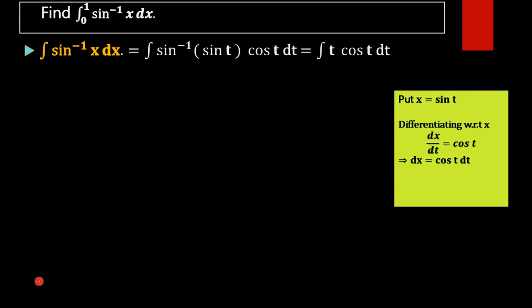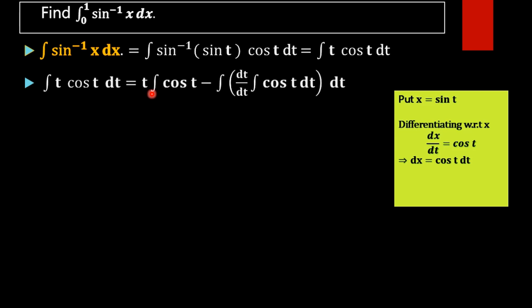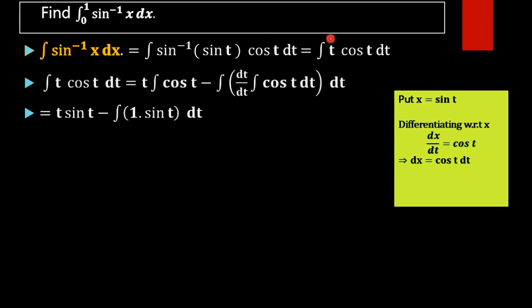We evaluate the integral of t cos t dt by applying integration by parts: t into the integral of cos t, minus the whole integral of dt by dt times the integral of cos t dt. The integral of cos t is sin t, giving us t sin t minus the integral of sin t dt. The integral of sin t is minus cos t, so we get the result t sin t plus cos t plus c.